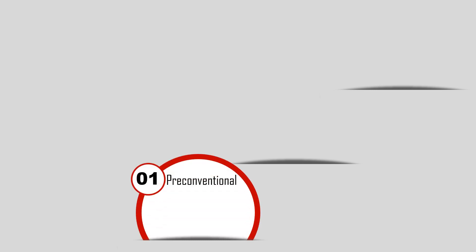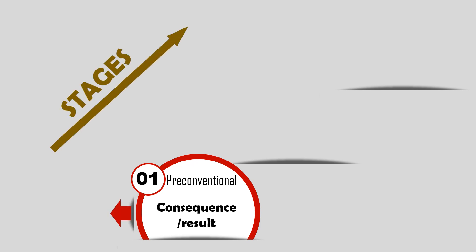Here are the levels and stages of moral development according to Kohlberg's theory. First is the pre-conventional level. Moral reasoning is based on the consequence or result of the act, not on whether the act itself is good or bad. The stages are: Stage 1 — Punishment or Obedience, and Stage 2 — Mutual Benefit.